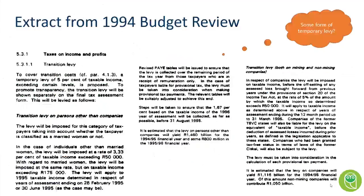I couldn't help thinking back to 1994, when to fund the democratic transition there was a transition levy of 5% imposed. For individuals it was applied in two tranches: a 3.33% levy for the 1995 year and a 1.67% levy for 1996. For companies, it was a 5% levy for the 1995 year, before the offset of assessed losses. I was wondering whether we could be looking at some kind of similar levy to fund this effort from government. As tax professionals, we are currently looking to utilise tax breaks, tax benefits, and TERFs — but in six months or a year, we may be looking at managing extra funding requirements for the government.